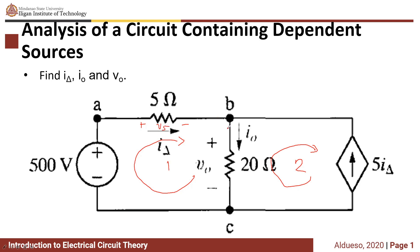Before solving the circuit, we need to analyze and use our understanding to know where we need to apply KCL or KVL in which we can get the most information. So looking at the circuit, we need to apply KCL at node B.